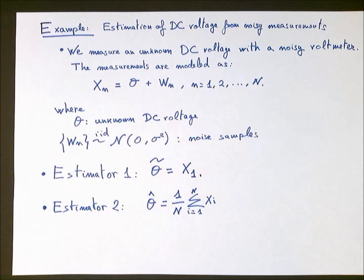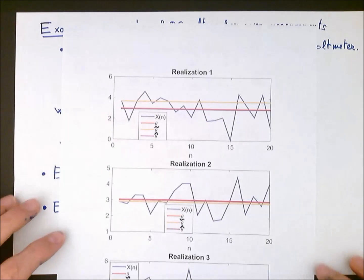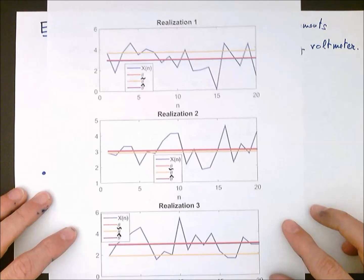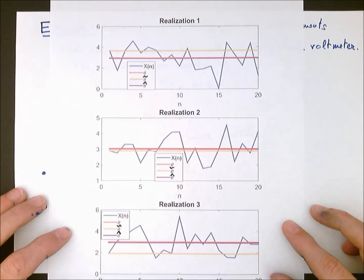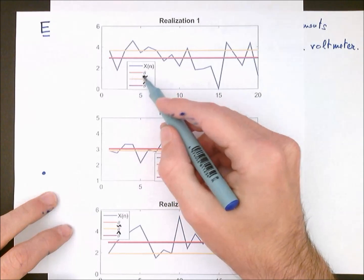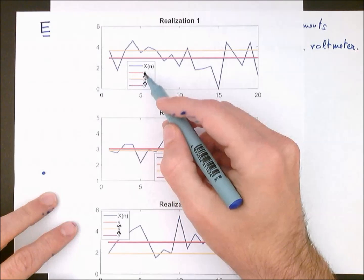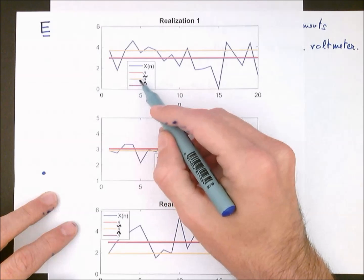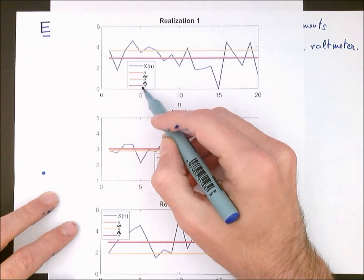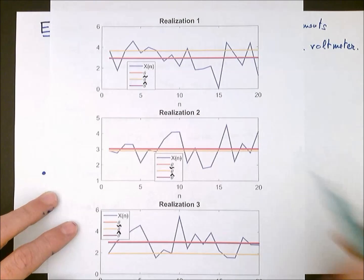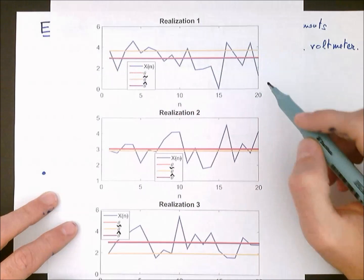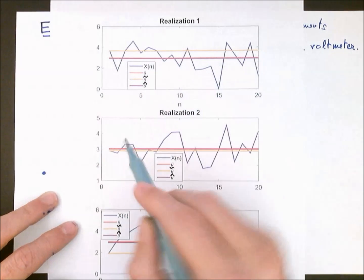Before computing the bias and MSE for each estimator, we can look at a simulation of several realizations and examine their performance. In these three plots, using the model discussed, we have plotted three realizations of the data x(n). The true parameter — the true voltage z — is plotted in red. The result of Estimator 1 is plotted in yellow, and in purple we plot the value of our sample mean estimator, Estimator 2. As we can see, the data fluctuates very much around the true value for each of the realizations.